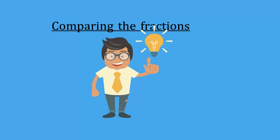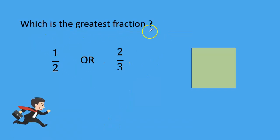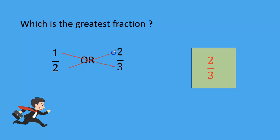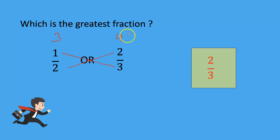Hi, welcome to the next topic: comparing fractions. Which is the greatest fraction, 1 by 2 or 2 by 3? The answer is simple: 2 by 3. The easy method is cross multiply. Here, 1 into 3 is 3, and 2 into 2 is 4. Among these both numbers, 4 is bigger, so 2 by 3 is the greatest fraction.